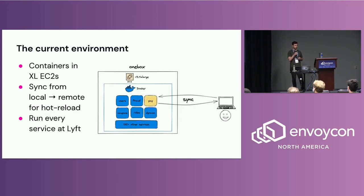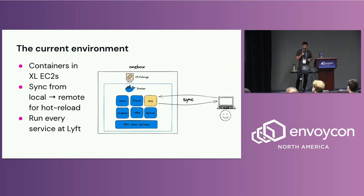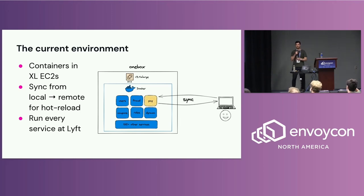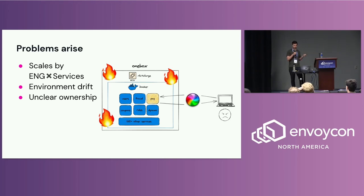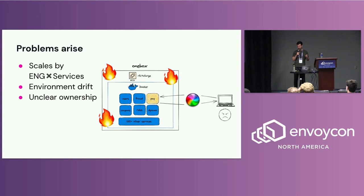Zooming in on OneBox — really large EC2 instances where a user would make modifications locally on their own machine, sync to the remote, and we'd do some hot reloading. Because they were so large, they could run every single service at Lyft. That worked for a long time, especially as we moved from a monolith to microservices. But eventually we ran into problems: it scaled by engineers and by services, so as Lyft grew we needed more OneBoxes and they needed to be larger. It just was not a great scaling situation.